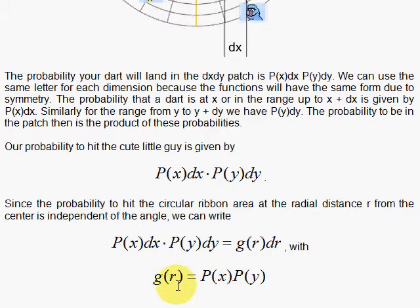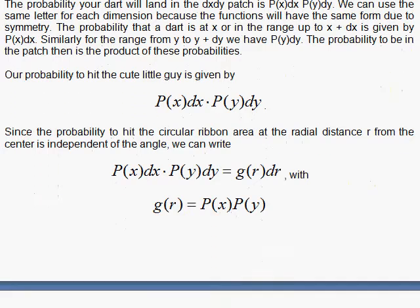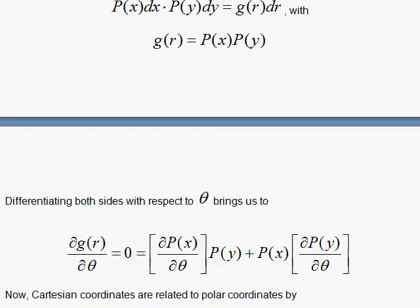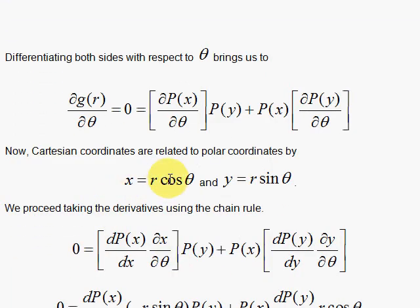We can write the probability as some function of r, the probability distribution. The trick is to take a derivative with respect to theta and set it equal to zero to get a differential equation we can work with. The partial derivative of g with respect to theta must be zero. We take the derivative using the product rule, then go to polar coordinates with the transformation x is r cosine theta, y is r sine theta, and use the chain rule.